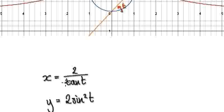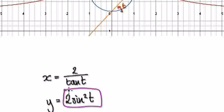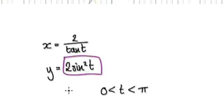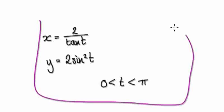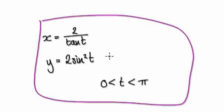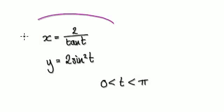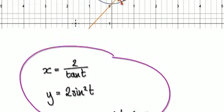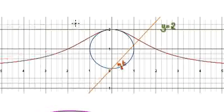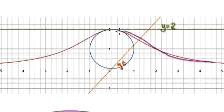So x equals 2/tan(t), and earlier we said y was given by 2sin(t)cos(π/2 minus t). So this is your final answer. Get yourself a graph plotter and plot this, and it will give you this path here.